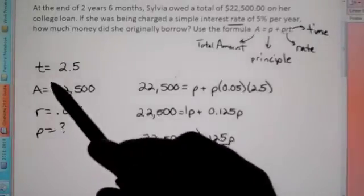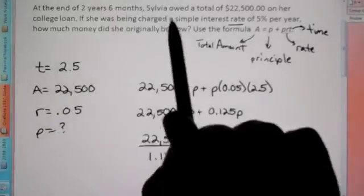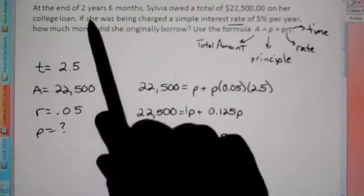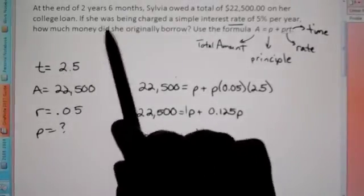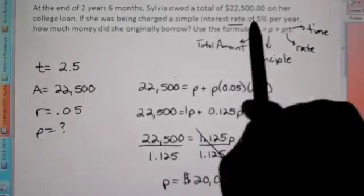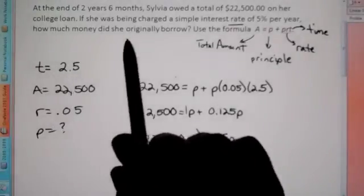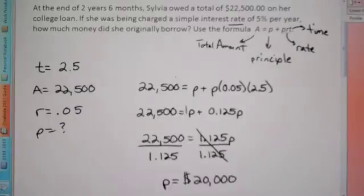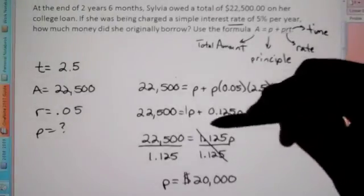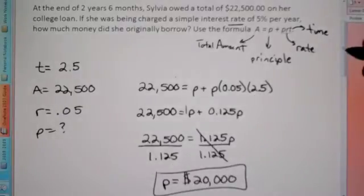Figure out what you know — they're not going to give you two variables that you don't know, there should only be one. So you have to look and figure out what the word problem is saying — figure out the value of each variable. Time, years, months — that's time. Total — that's total amount, so that's A. Percentage, whenever you see percentage, you know that's the rate. So we know we must be looking for P. How much money did she originally borrow? Principal is original. So we plug into the formula exactly how the formula is, and then we solve for P.